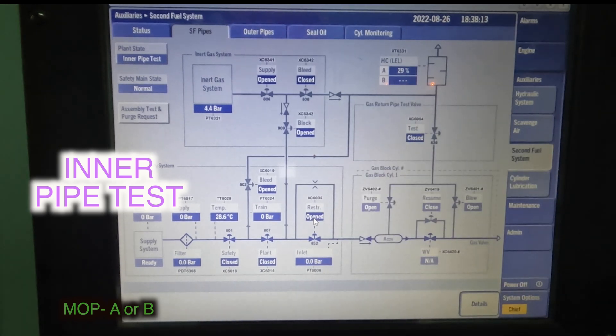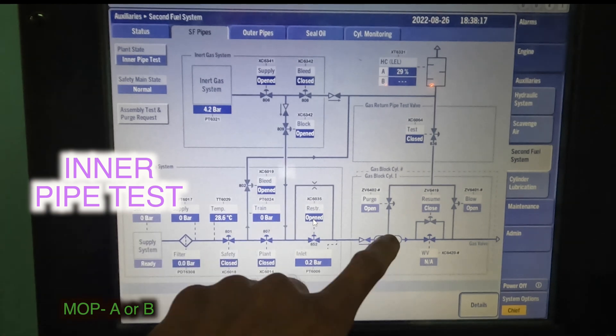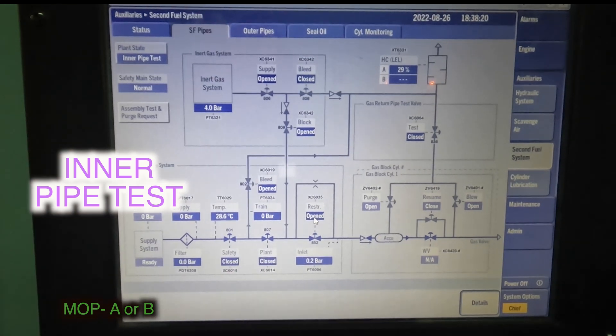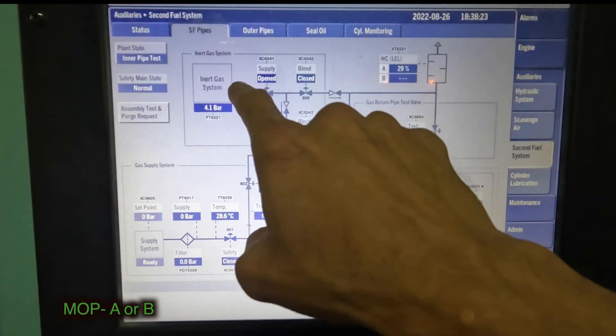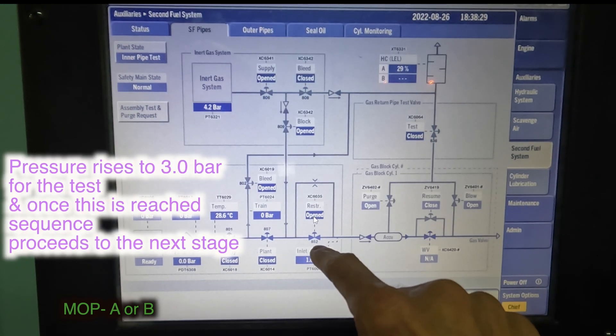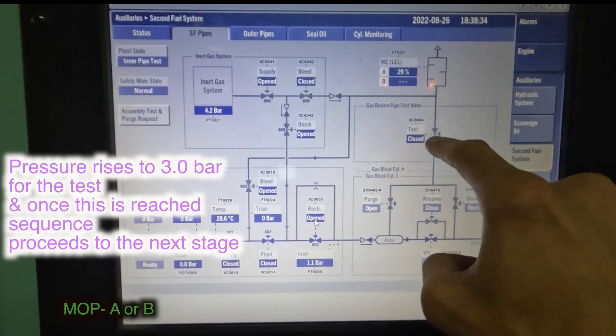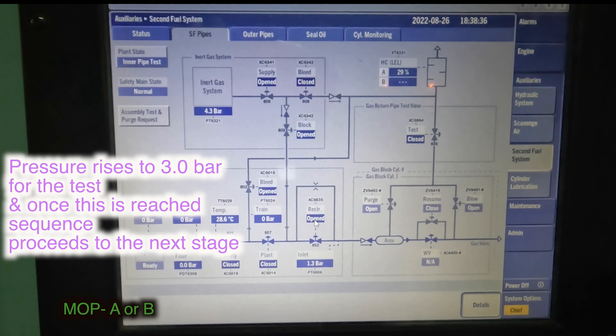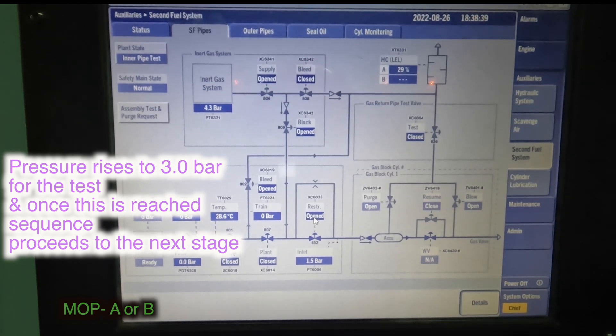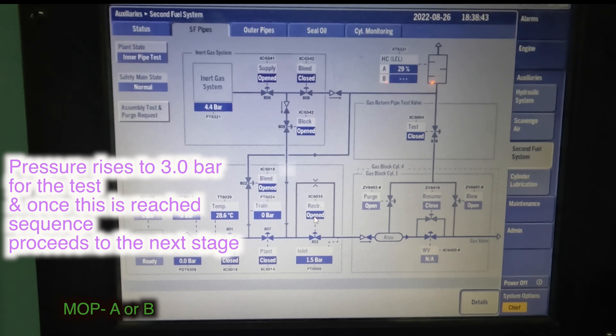Now it's coming to something called inner pipe test. That means this entire pipe is pressure tested with nitrogen, and the pressure drop is observed. So supply from the nitrogen opens up. This one, 809 opens up. 852 also opens up. And now we are building up pressure into this system. See, the test valve is closed. Pressure will build up into the system. It will hold there. Once pressure is building up, that means there are no leaks in the system, and the inner pipe test is good to go.